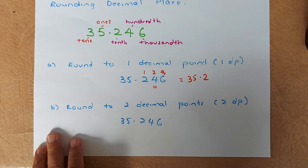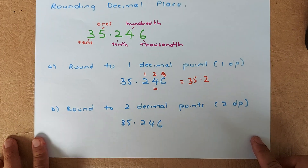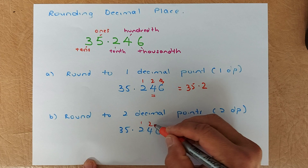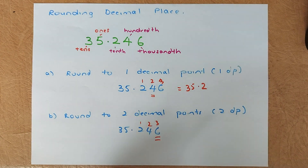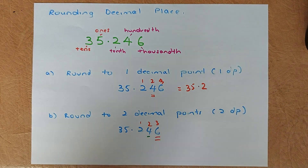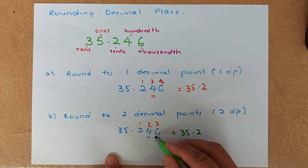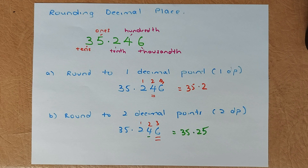So after the decimal point there is only one decimal digit, which is why the answer is 35.2. Now for two DP: the first DP is two, the second DP is four, and the third DP is six. If you are rounding to two decimal places, you look at the third number, which is six. Six is more than five, so you round up the four to five. Your answer rounded to two DP is 35.25.